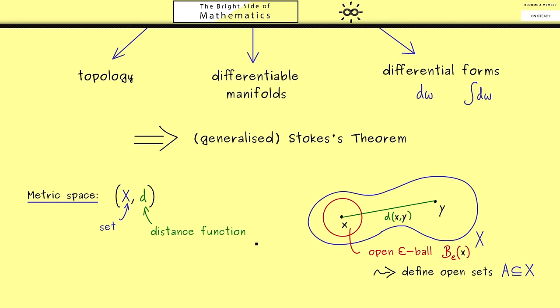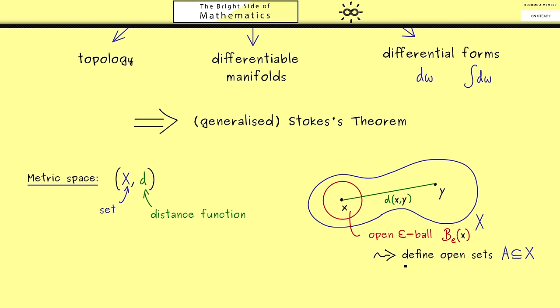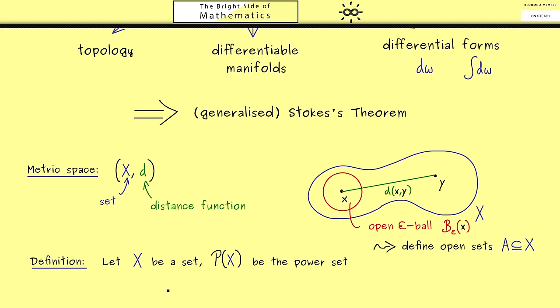Indeed, the abstraction of this idea leads to topology. Hence we just list all the sets that should be open, and then we deduce everything from them. Most importantly, in this definition we don't need a metric anymore. However, of course we still have a set X. Then what we need is the collection of all subsets of X, which we call the power set of X and denote by P(X).